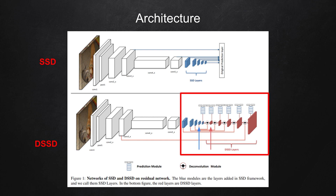The authors state that the best performance is achieved when using an element-wise product to combine these two features. Once a new DSSD layer is obtained, the same process can be repeated with the new feature, resulting in a group of DSSD layers. In the figure, we see that there are five new feature maps that can be used to produce bounding box and class information.